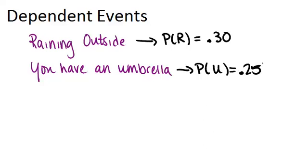Now what about if you already knew that it was raining? So you've already determined that it's raining, we've fallen into that 30% of the time when it's raining. Is the probability that you have an umbrella still 25%? I would say probably not, because I think that these two events are dependent on one another.